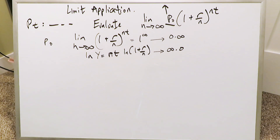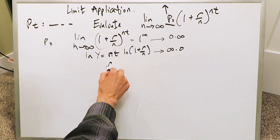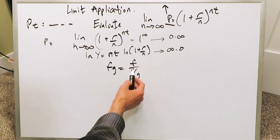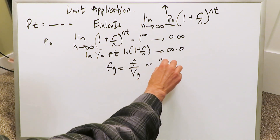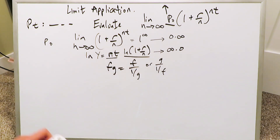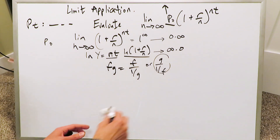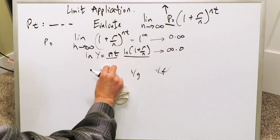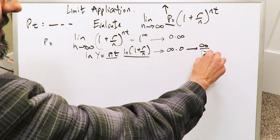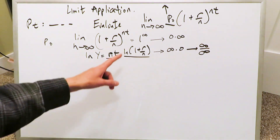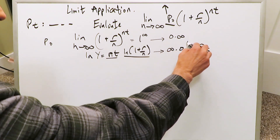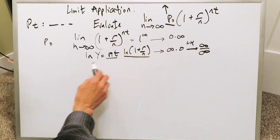This indeterminate product type has to be converted into a quotient form. You can do f divided by the reciprocal of g, or g divided by the reciprocal of f. I would pick the easier route here, which converts the indeterminate product type into the basic indeterminate form of infinity over infinity. Remember, we started with an indeterminate power type, converted it into this form, which then converts into that quotient form — and then we apply L'Hôpital's rule.